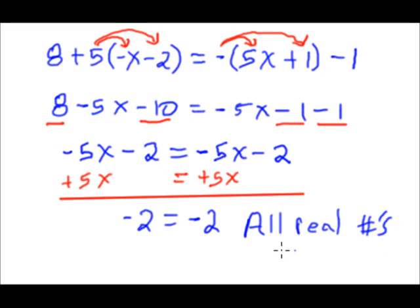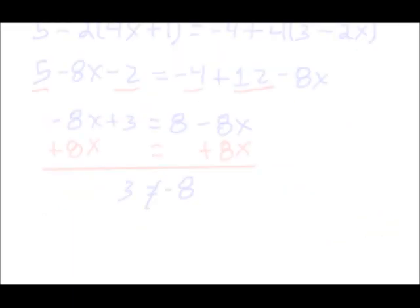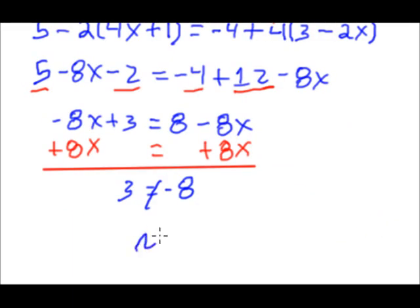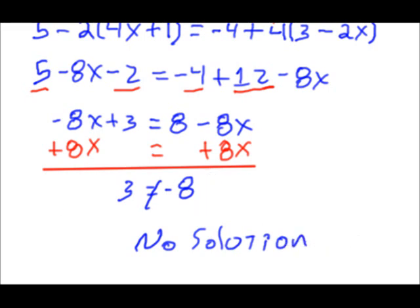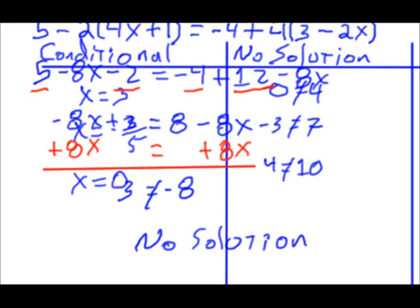Once again, if you don't believe me, pick a number, go back and substitute it into the original equation, and both sides will always be exactly the same. As opposed to the no solution case, no number will ever work because that's a contradiction. So we have three types, like I said — there's always three types.